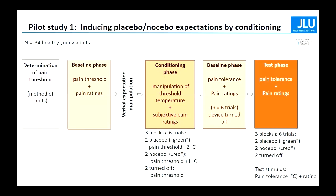We chose threshold-based intensities because for later use in children and adolescents, we cannot go to the intensities usually administered when testing adults. The design included determination of pain threshold and baseline, verbal expectation manipulation with explicit instructions plus conditioning, a second baseline phase for the tolerance measure, and a test phase where we tested pain tolerance — hypothesizing that the experience of pain reduction or increase would generalize to pain tolerance.